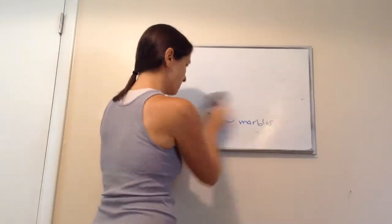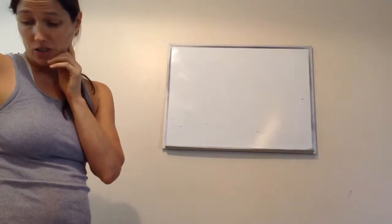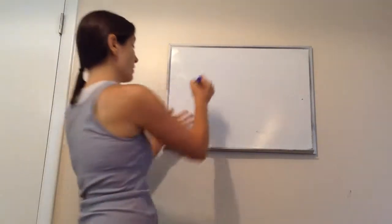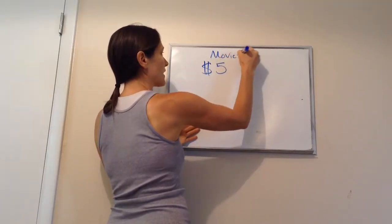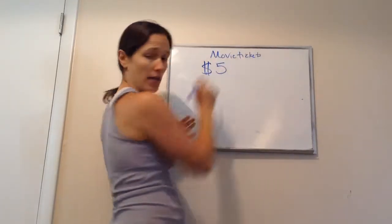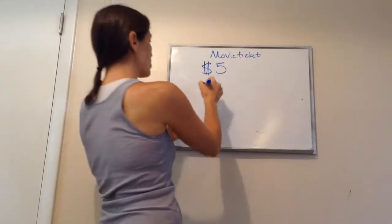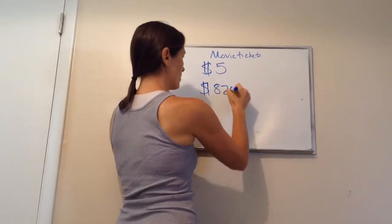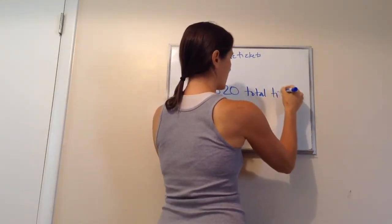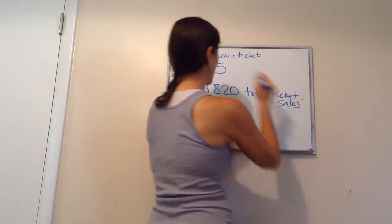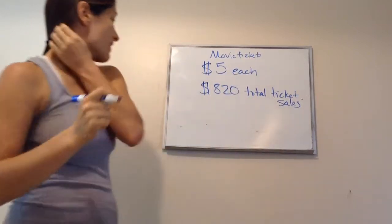All right, let's try another problem. Here's what it says. Movie tickets sold for $5 each. Wow. That's great. $5 for movie tickets. And it says this. The total ticket sales were $820. Total ticket sales. Movie tickets were $5 each.